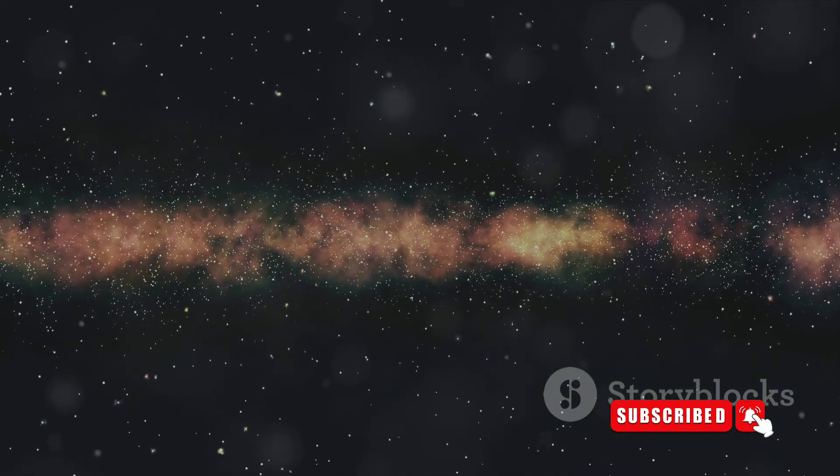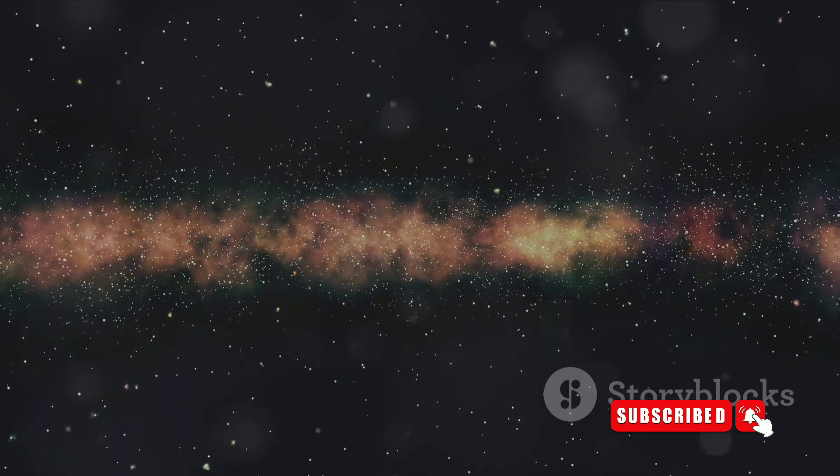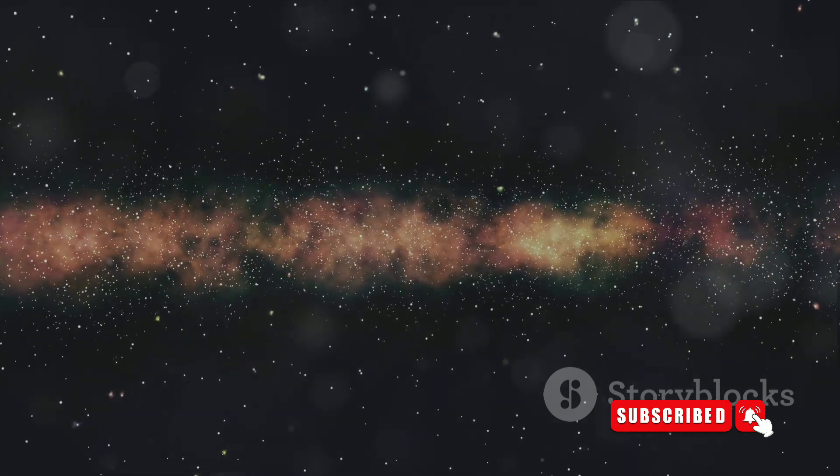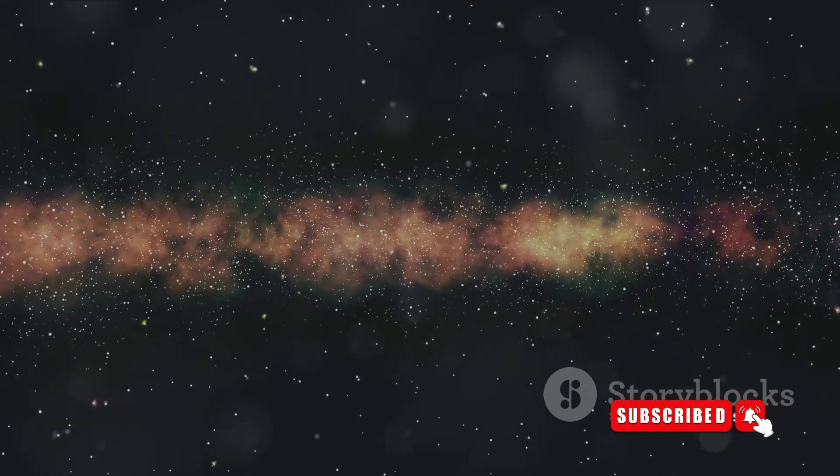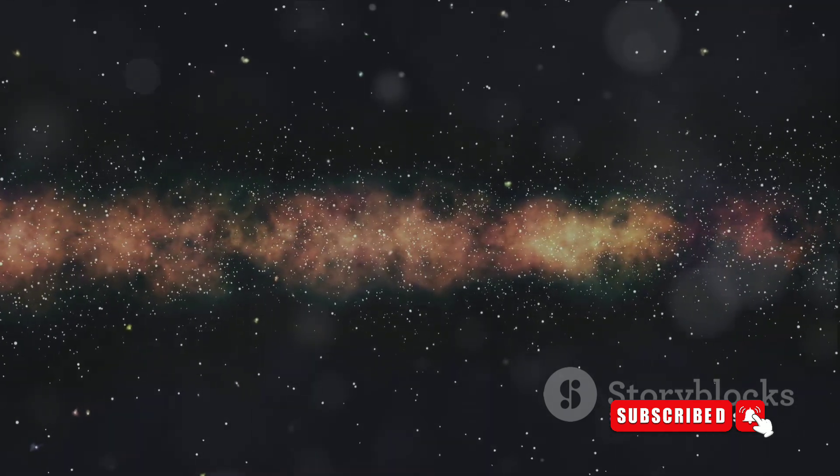In terms of thickness, the Milky Way is relatively thin, about 1,000 light-years. Picture a pancake that's 100 times as wide as it is thick. That's a pretty good approximation of the shape of our galaxy.